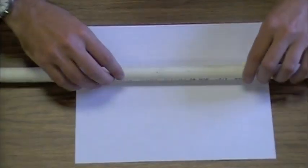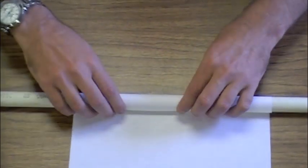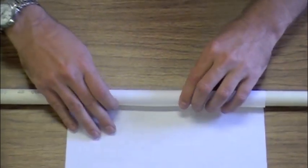Begin by placing the PVC pipe at one end of the paper. Slowly and carefully roll the paper tightly around the PVC pipe.